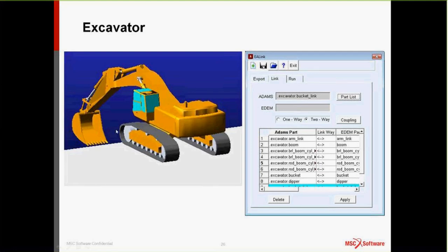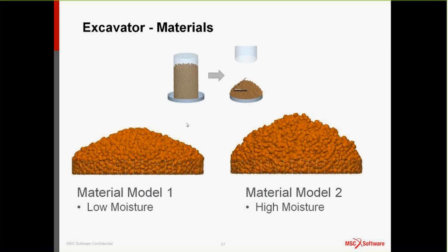DEM Solutions provides a generic EDEM material model database (GEM) with thousands of materials. For the excavator example, two simulations are run — one with a low cohesion, low moisture material that creates a relatively low angle of repose when unloaded from a cylinder, and one with a higher moisture, higher cohesion material that creates a relatively higher angle of repose. The two simulations are identical except for the material model used.